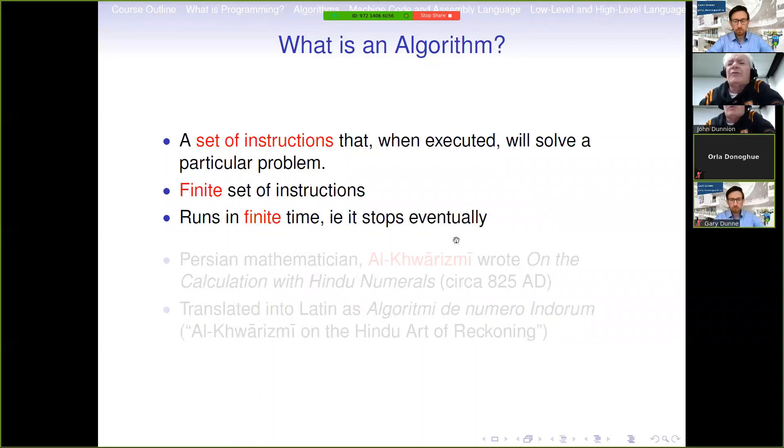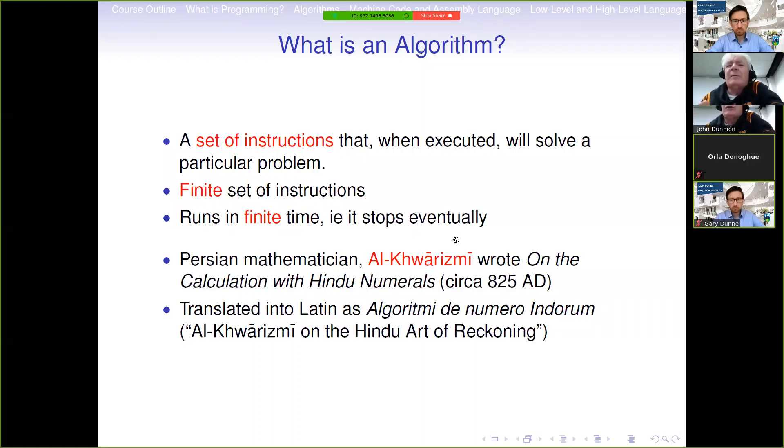The word algorithm originally comes from the name of a Persian mathematician in the ninth century, who wrote on the calculation of Hindu numerals. And when this was translated into Latin, then the word algorithm was what came out of his surname, Al-Khwarizmi.